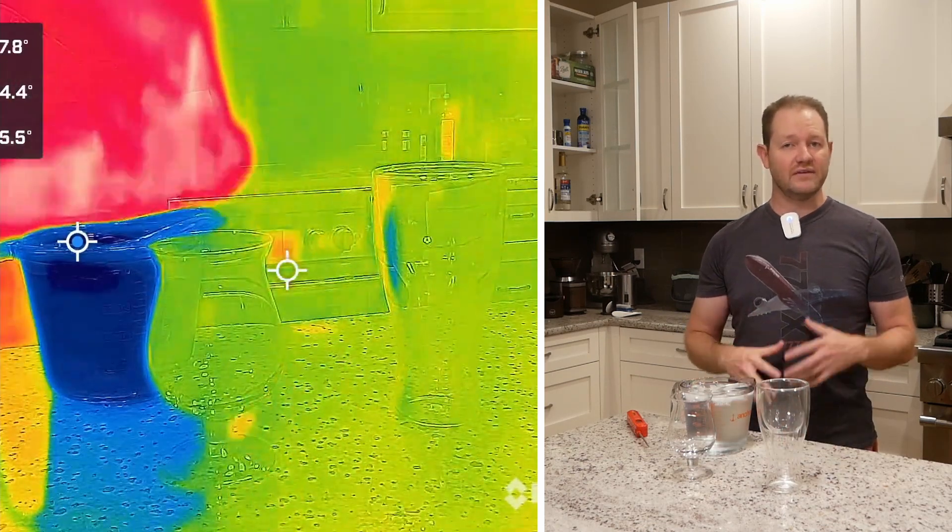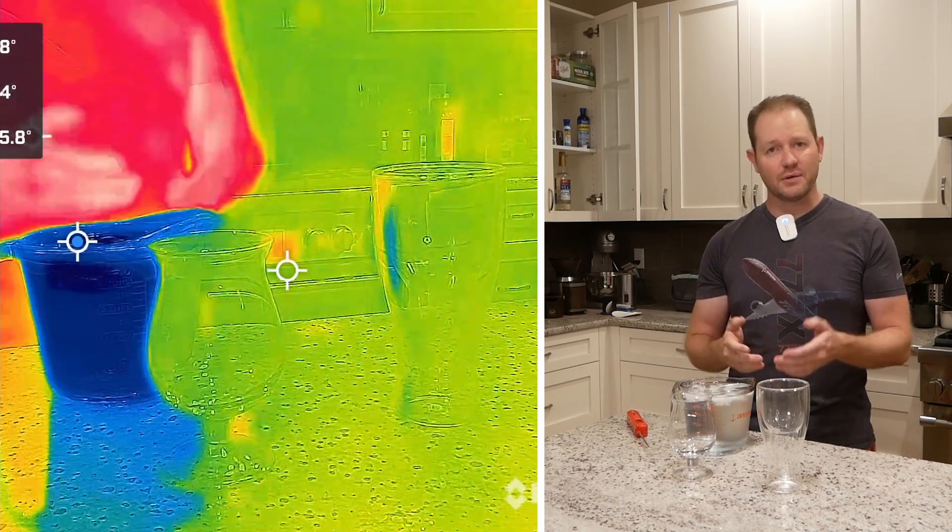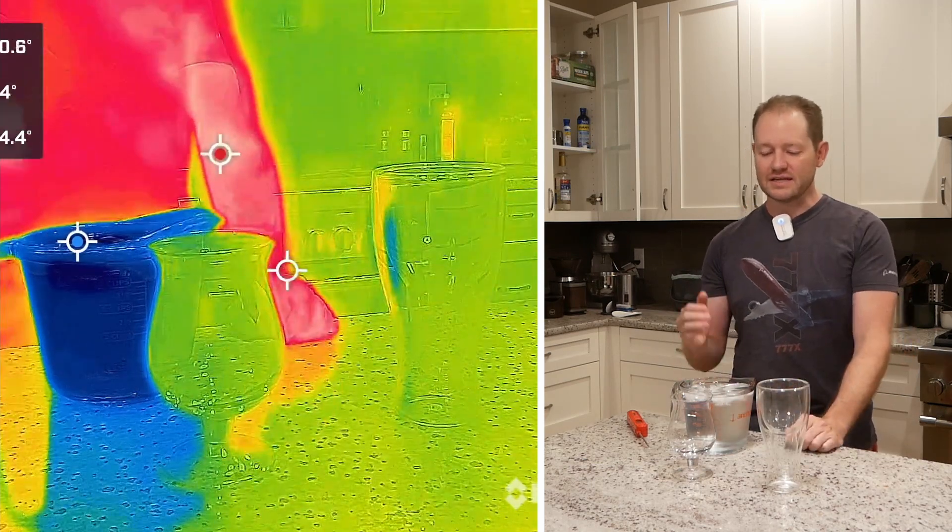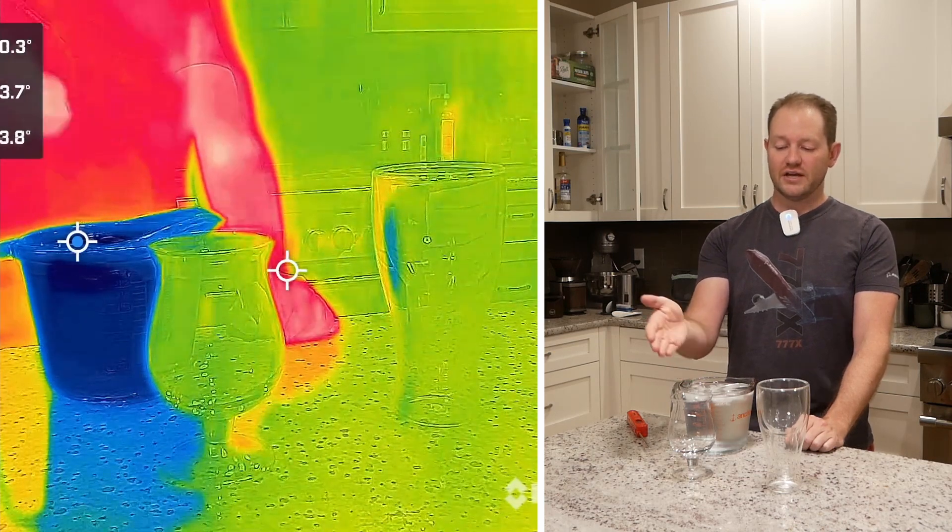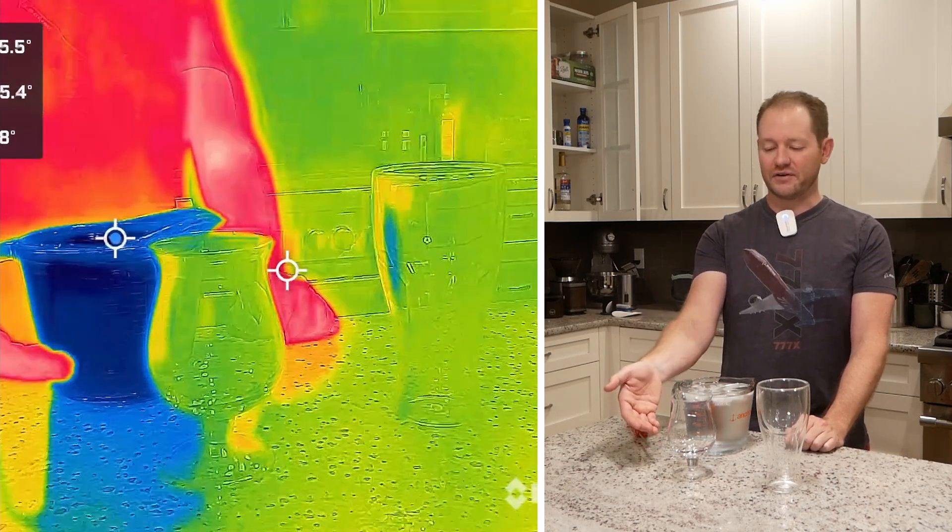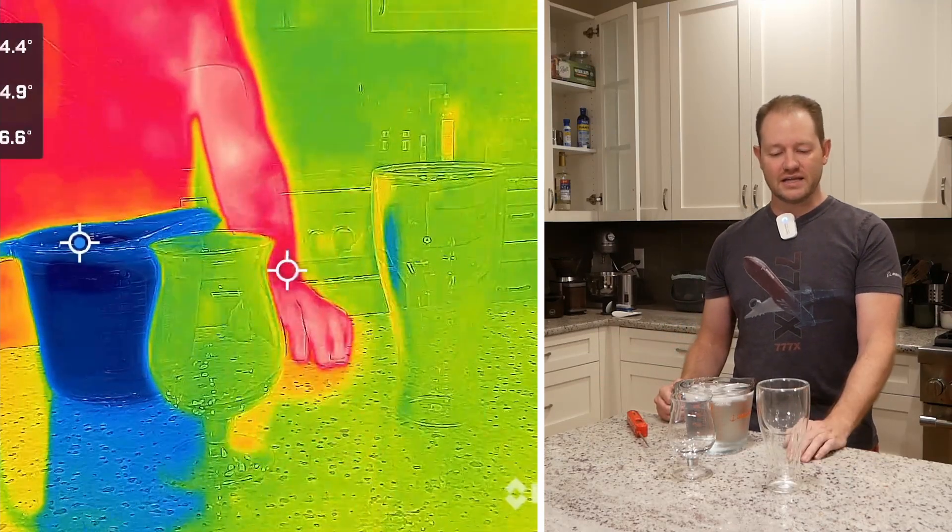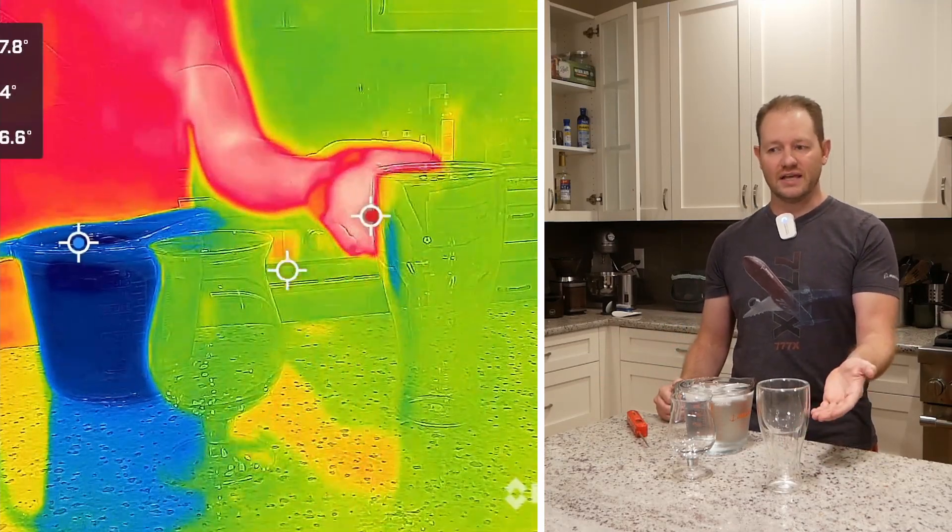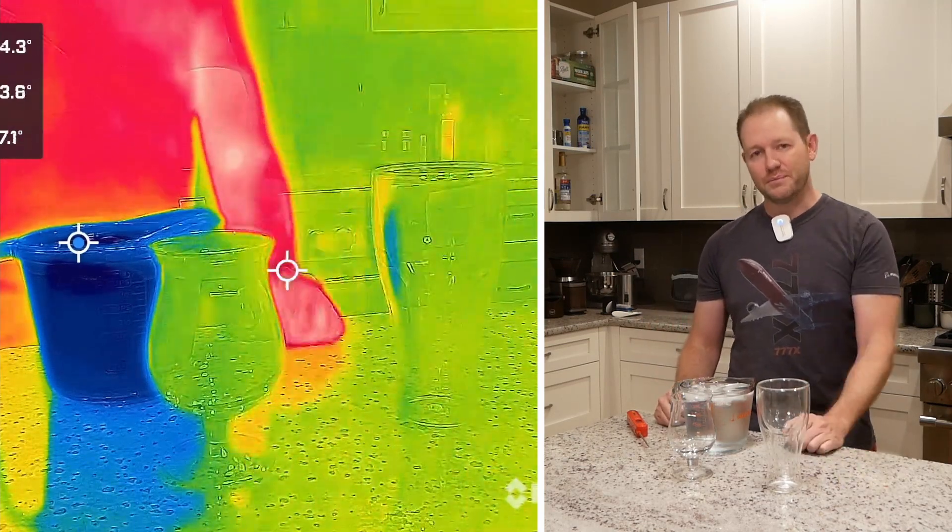And then for the visualization component, I also have my thermal camera over here synced up. And what I think we're going to see is as I pour the ice-cold water into the tulip glass, you're going to see the glass itself get very cold very quickly, whereas you're not going to see that same temperature drop in the double-walled insulation one because the thermal camera is going to measure the outside temperature of the glass.